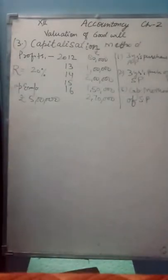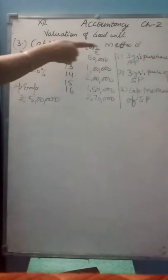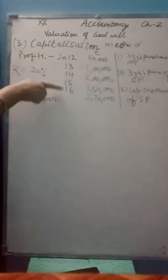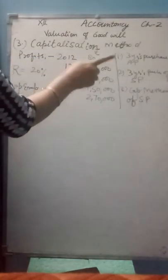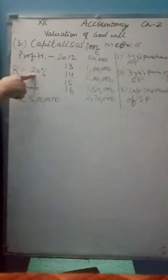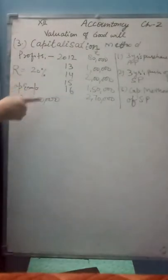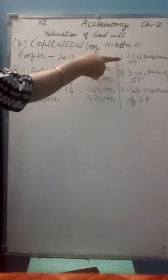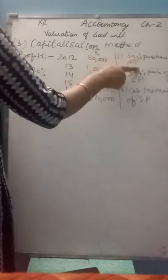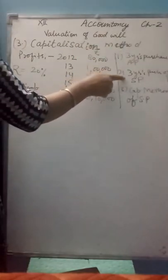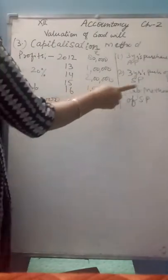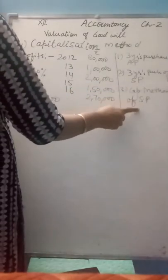Now the last question of this capitalization method. Profits of last five years are given. Normal rate of return is 20%, capital employed is 5 lakhs. Three requirements: first is 3 years purchase of average profit, second is 3 years purchase of super profit, and third is capitalization method through super profit.